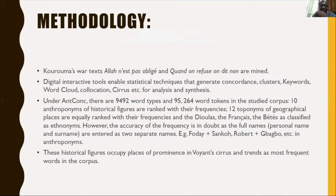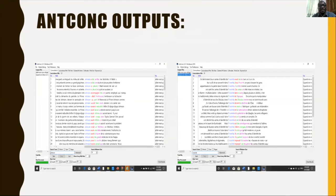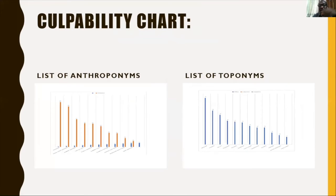These are the ANTCOM outputs that were generated, and there you can see them with their collocates. From these, I was able to generate this list of anthroponyms and then a list of toponyms. These are just as they appear according to the positions they occupy in their frequencies, and if it is in Variant, then you see them in their prominence.